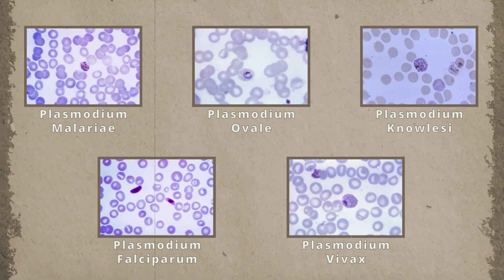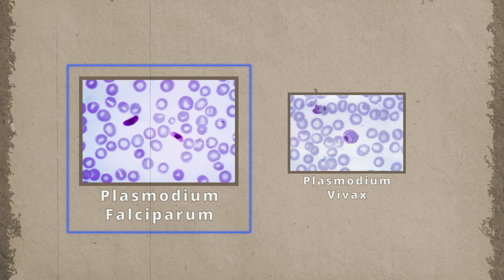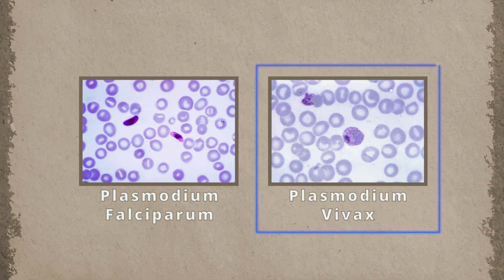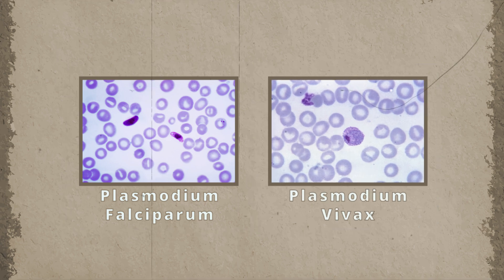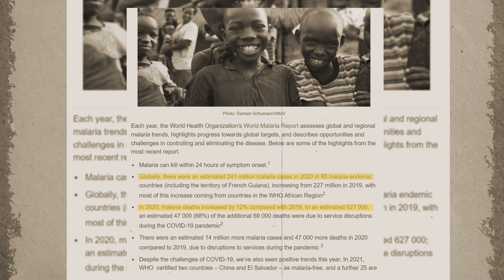There are 5 parasite species that cause malaria in humans. And two of these species, Plasmodium falciparum and Plasmodium vivax, pose the greatest threat. In 2020, there were an estimated 241 million cases of malaria worldwide, and the number of malaria deaths stood at 627,000.